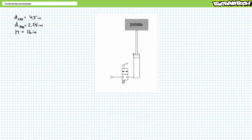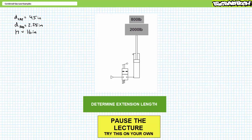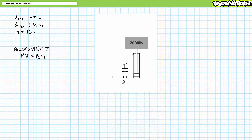Part two: at full extension, the valve is moved to the closed position and an additional 800 pounds is stacked on top. What does the cylinder do? Given air is compressible, we might expect this additional weight to compress the cylinder and change its extension length. Solve for this length — assume this occurs at constant temperature. Pause the lecture and try this on your own if you're tracking.